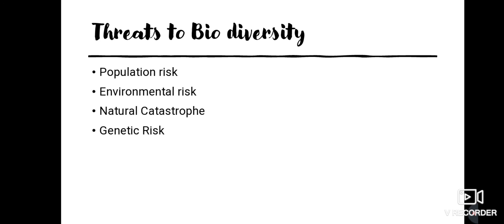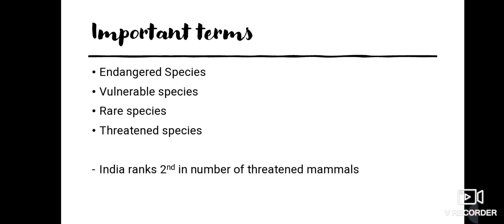Now we can move into important classification terms. Endangered, vulnerable, rare, and threatened species — animals and plants are classified using these terms. The International Union of Conservation of Nature and Natural Resources (IUCN) maintains data on threatened species, called the Red Data Base or Red List, which monitors information on rare and vulnerable species of plants and animals.